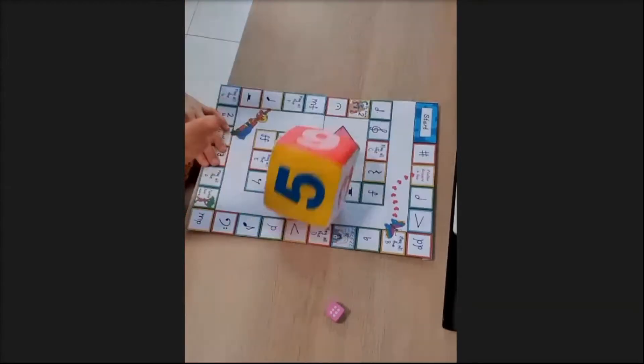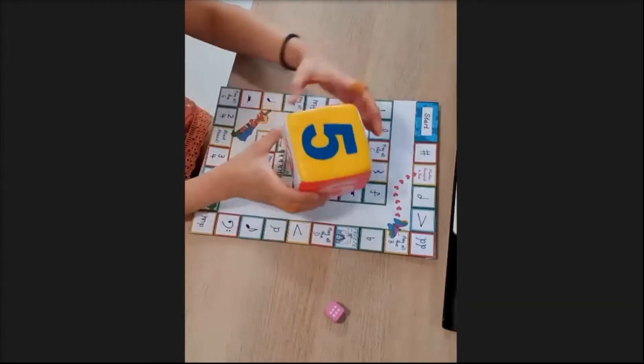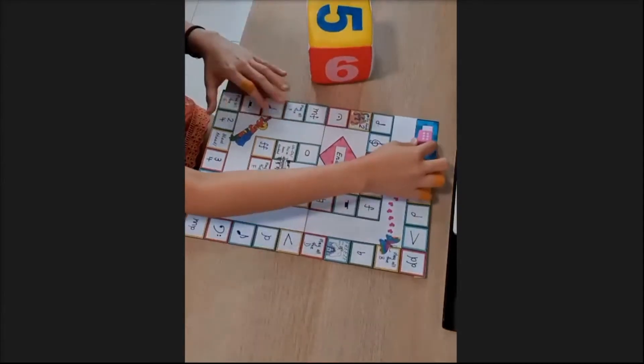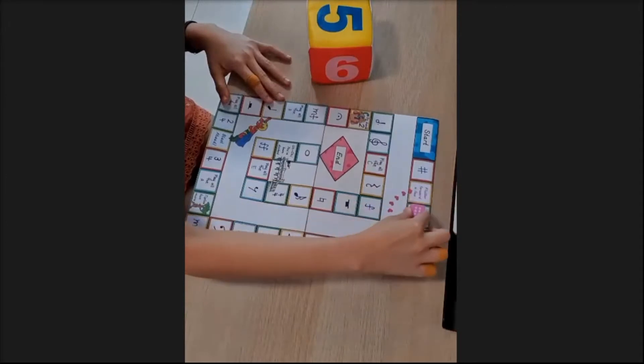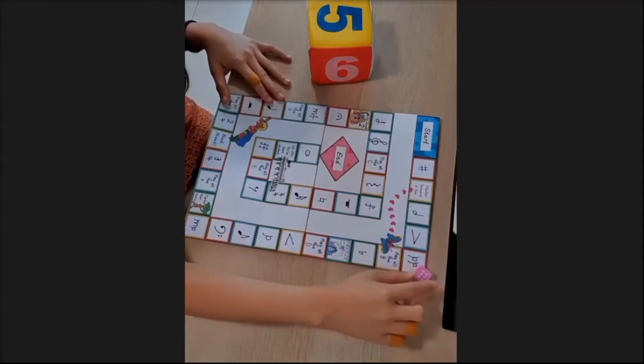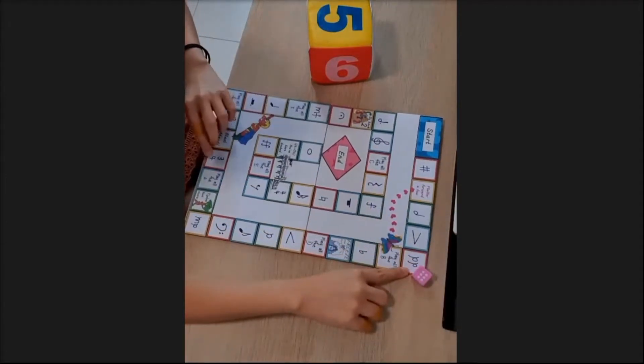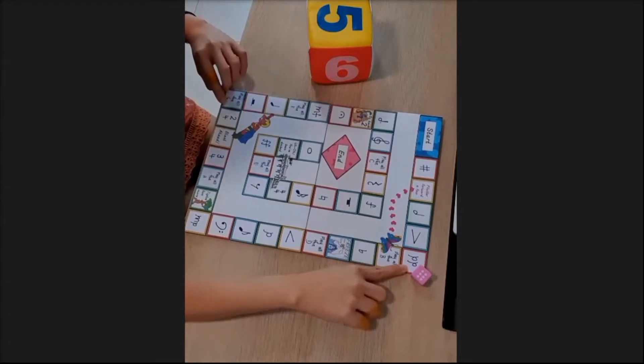Students will get to roll the dice. For example, you've got a three. So you are going to start from the beginning here and then you walk five steps. One, two, three, four, five. And you reach here. So, Teacher Megan, can you tell me what is this? Pianissimo.